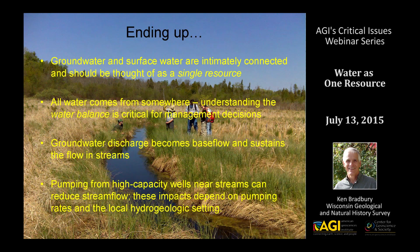To finish up: groundwater and surface water are well connected and should be thought of as a single resource. All water comes from somewhere — the water balance is critical for management decisions, and perturbing it changes something. Groundwater discharge becomes base flow and sustains streams, lakes, and wetlands. Pumping from wells near streams can reduce streamflow, and these impacts depend on pumping rates and the local hydrogeologic setting.